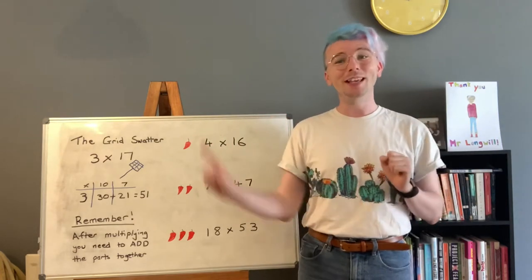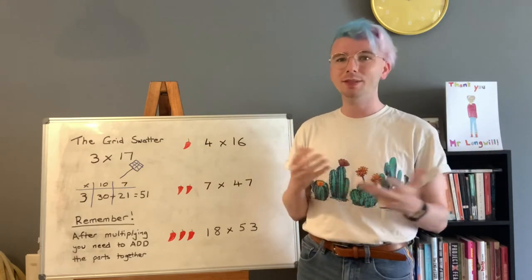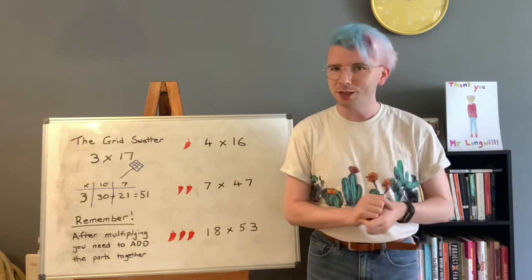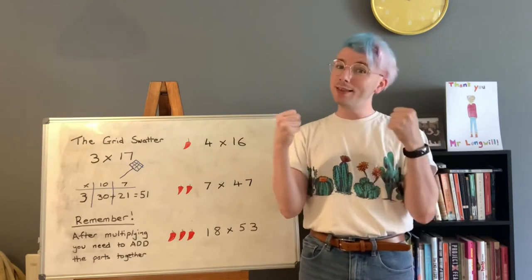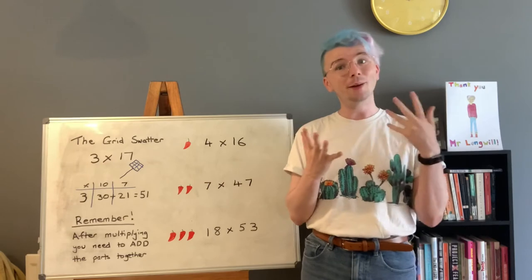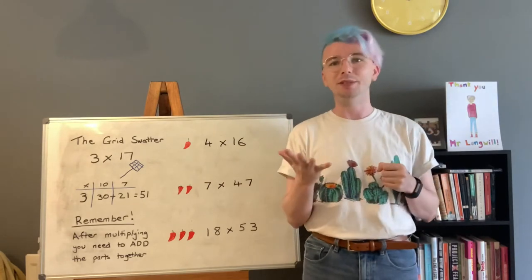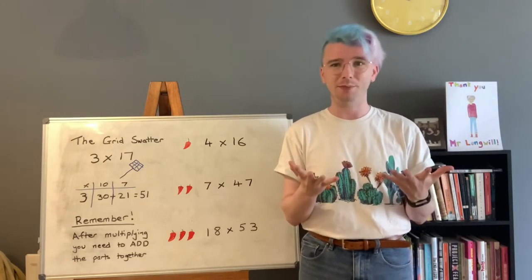Let's take a look at our example sum. I have the sum 3 times 17. Now we don't normally do our 17 times table but we could split that number up into the number 10 and the number 7 because we do go over our 10 times table and we do go over our 7 times table.